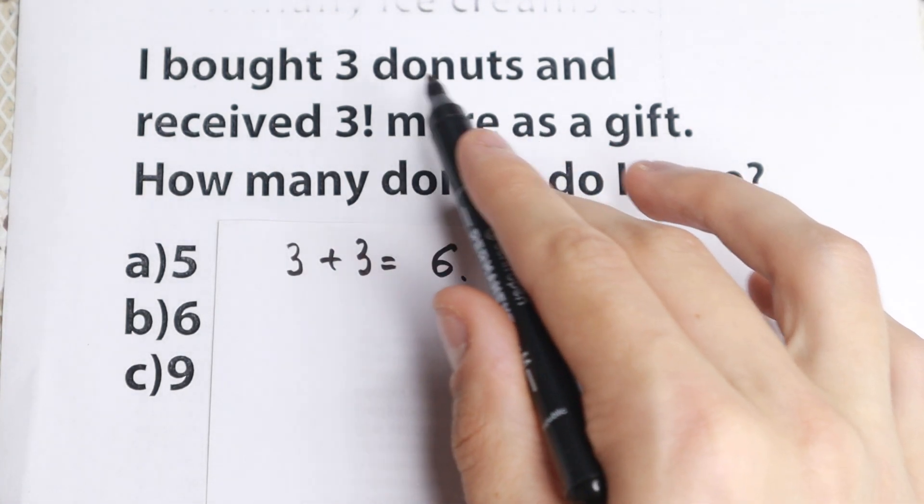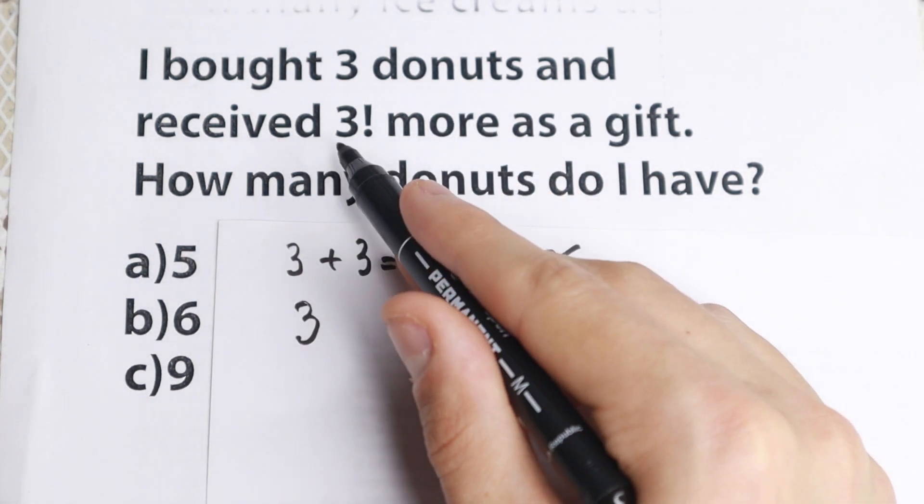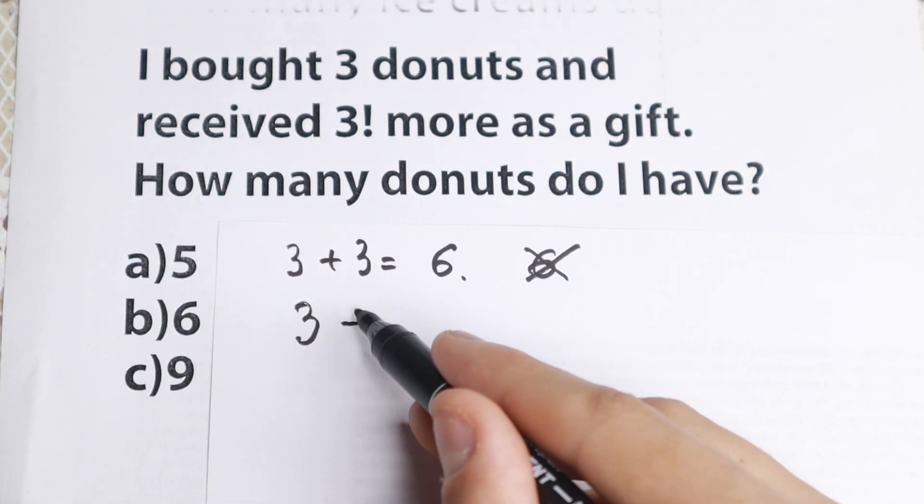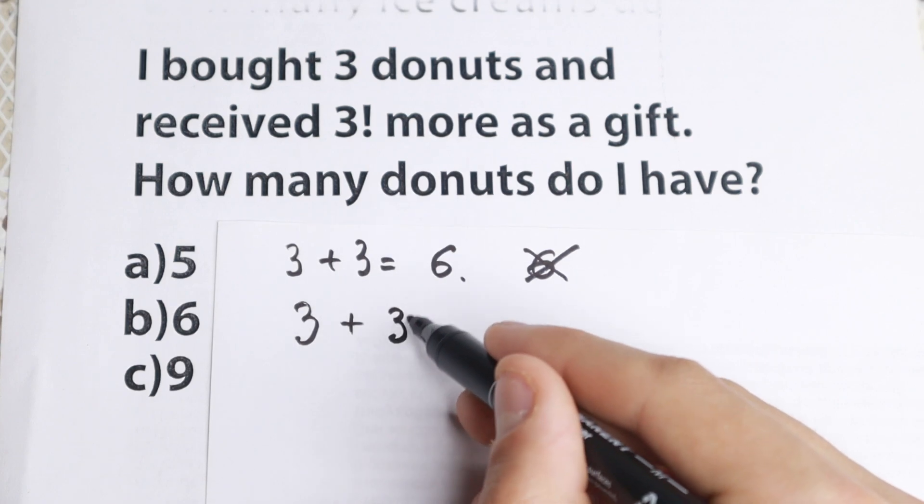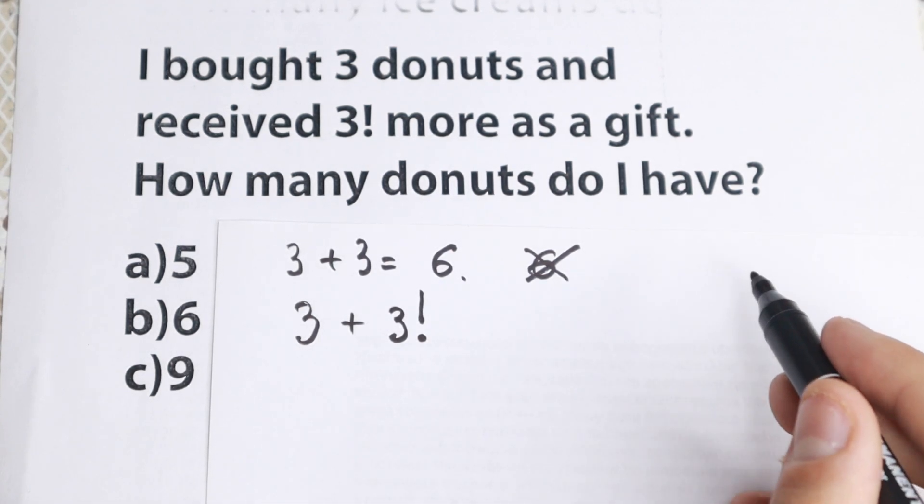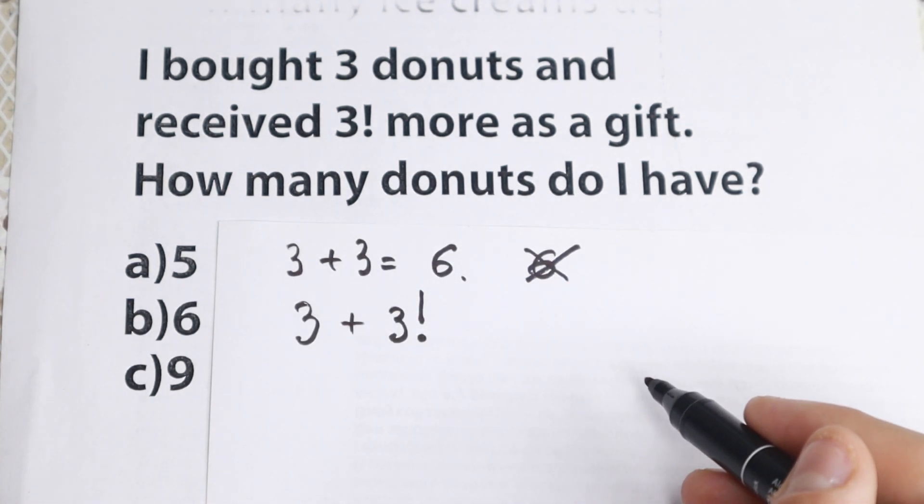So as a result I bought three donuts, this is good, we have three, and right here I received three factorial more as a gift. So as a result I don't need to add three, I need to add three factorial. And this is maybe the funny trick right here because this is not 3 plus 3, we have 3 plus 3 factorial right here.